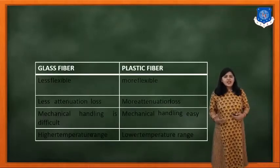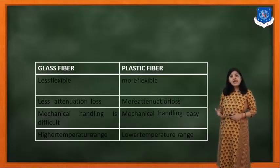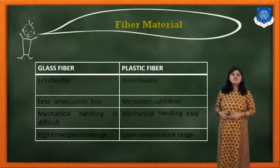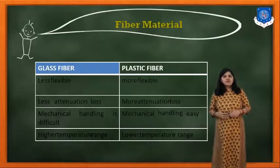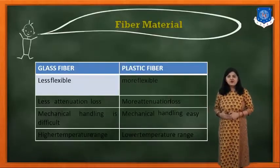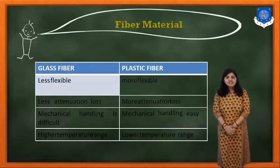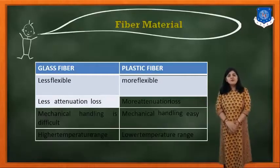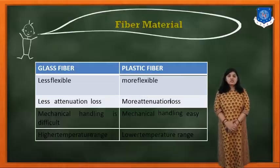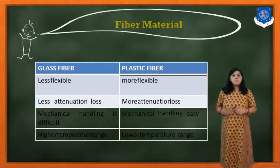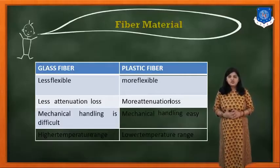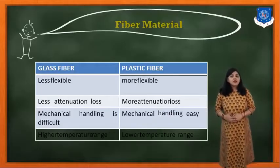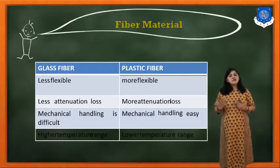According to these requirements, fiber materials are of two types: glass fiber and plastic fiber. The glass fiber is less flexible, while the plastic fiber is more flexible. The glass fiber provides less attenuation loss compared to plastic, while plastic provides more attenuation loss. The mechanical handling of glass fiber is difficult, whereas handling of plastic fiber is easy.